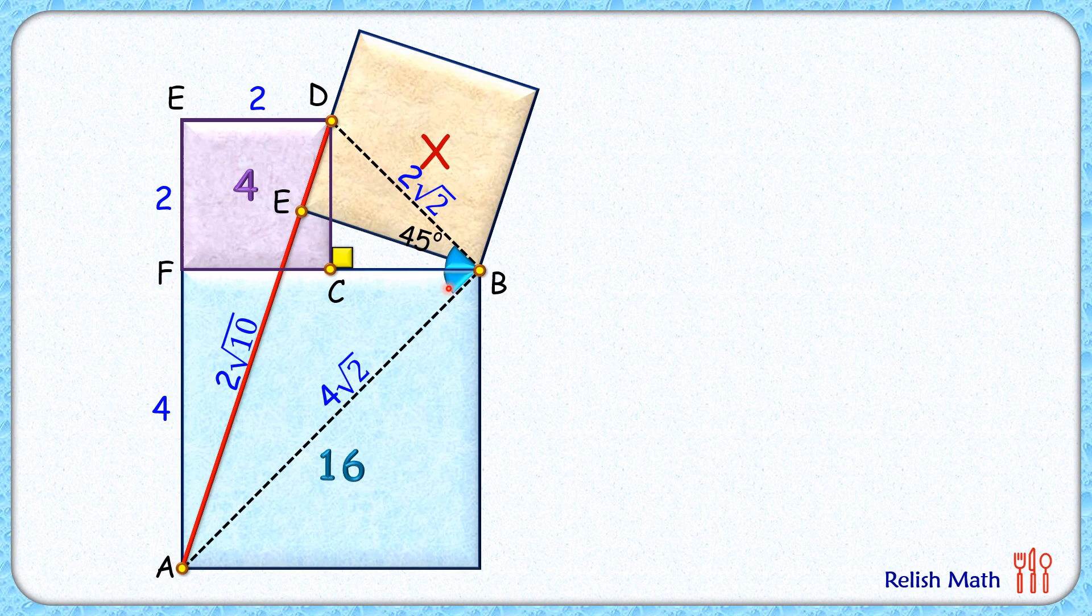So this angle here will be 45 degrees. Now in this triangle ABD, this angle B is 45 plus 45, or 90 degrees.